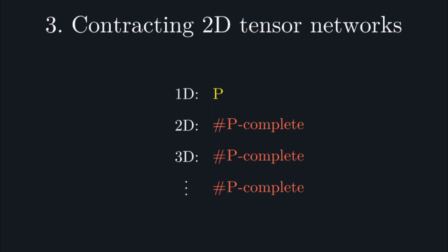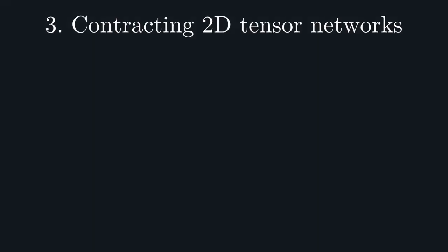But, whoever let complexity theory get in the way of a good time. Instead of hoping for an exact contraction scheme, what about heuristics that will allow us to approximate contraction? The trick here is going to be to utilize techniques from 1D tensor networks to attack the 2D problem.